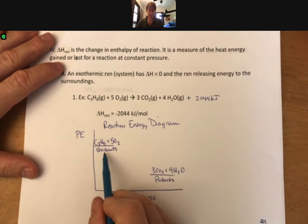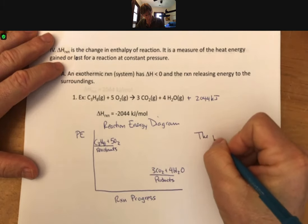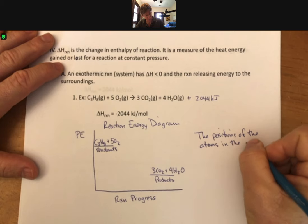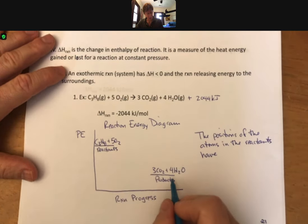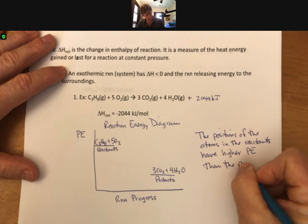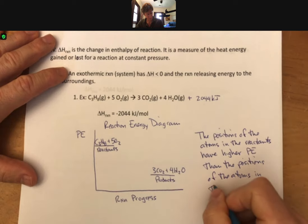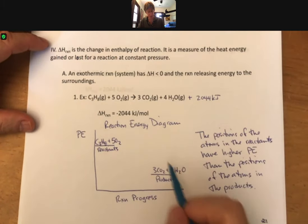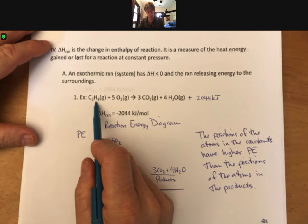And what this says is that the positions of the atoms in the reactants have higher potential energy than the positions of the atoms in the products. Because the question is, where does this energy come from that is given off? The energy that is given off comes about because there's changes in the positions of the atoms as we move from reactants to products.